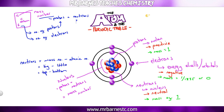For example, aluminium: we've got 27 protons and neutrons added together. The 13 at the bottom tells us we have 13 protons and also 13 electrons. To work out the neutrons, it's 27 take away 13, which gives us 14 neutrons.